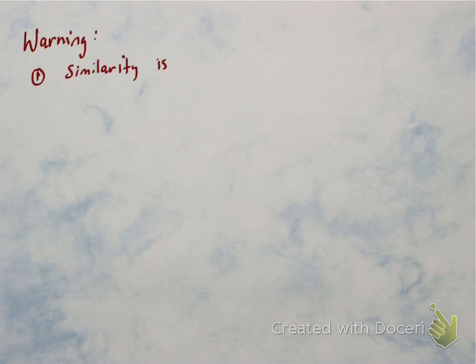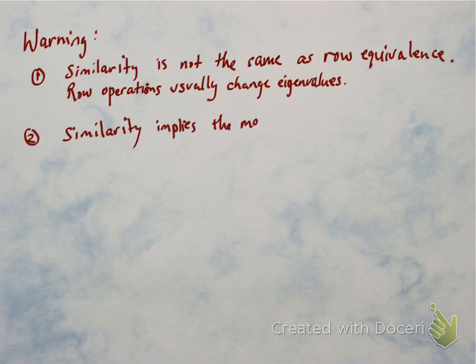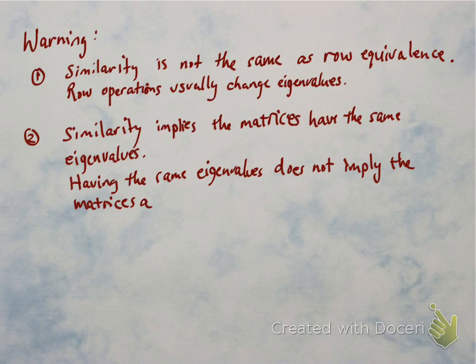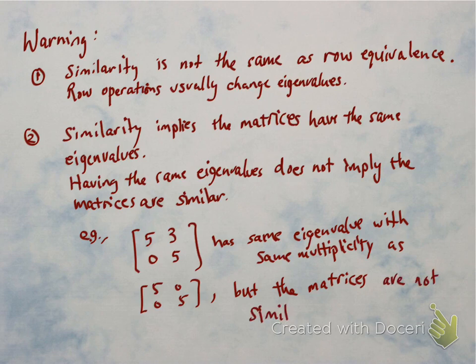So here's a warning, though. So similarity is not the same as row equivalence. When you do row operations, usually you're going to change the eigenvalues of a matrix. The second warning is similarity implies that matrices have the same eigenvalues, but having the same eigenvalues does not imply the matrices are similar. So, for example, this matrix 5, 3, 0, 5 has the same eigenvalue as 5, 0, 0, 5, but the matrices are not similar.